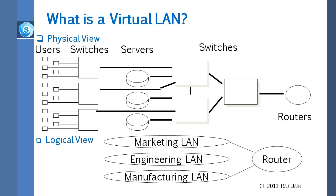So basically what we did was take a number of hosts and put them into three groups — a blue group, a red group, and a green group — representing different departments. They look like they are connected by their own wire, even though they are all physically connected together, but we have broken the connections logically. The manager decides who is on what VLAN — who is red, who is blue, who is green — and that is why it is called virtual. Virtual is better than the real because it is location independent.